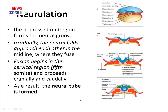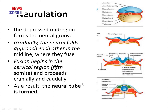Gradually, the neural folds come into close opposition, fuse, and ultimately fusion begins at the cervical region. After that, it proceeds in both the cephalic and caudal directions. As a result of their formation, the tube is known as the neural tube. They fuse gradually and form the neural tube.